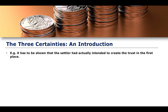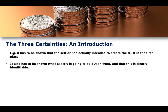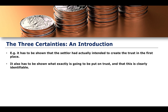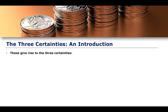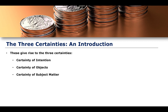For example, it must be shown that the settlor actually intended to create a trust in the first place. It also has to be shown what exactly is going to be put on trust and that this is clearly identifiable. And finally, the settlor has to be very clear in identifying who will be the beneficiary of the trust. These are essentially the three certainties: the certainty of intention, the certainty of objects, and the certainty of subject matter.